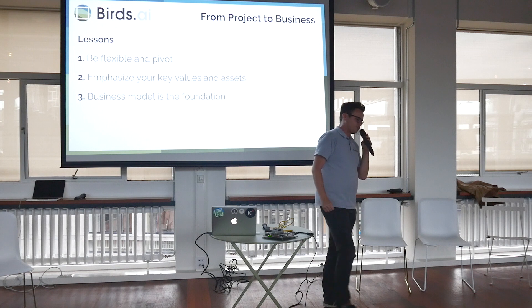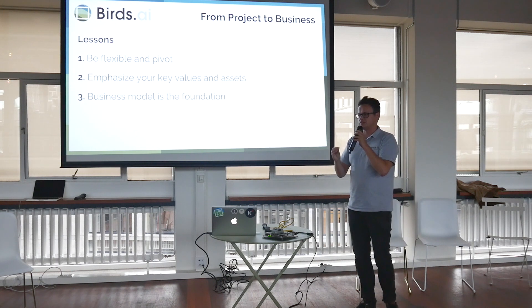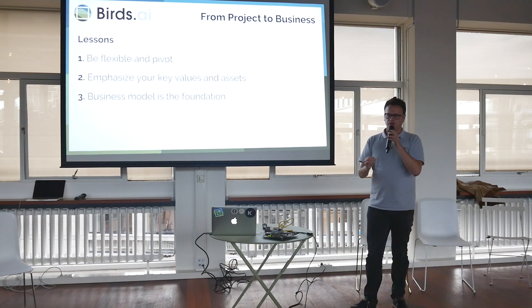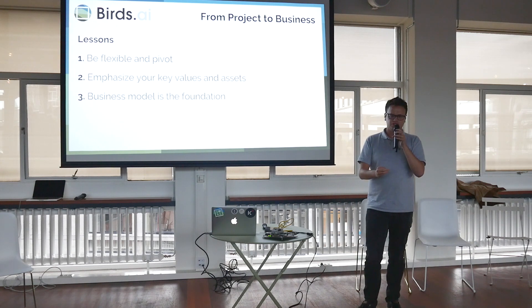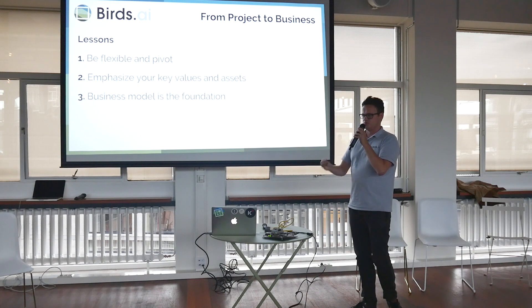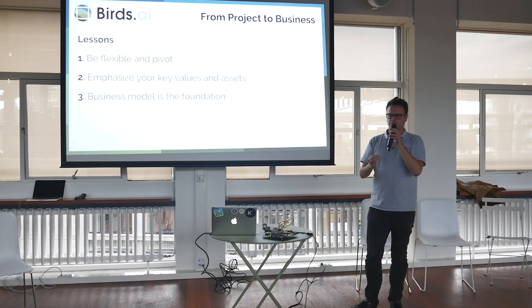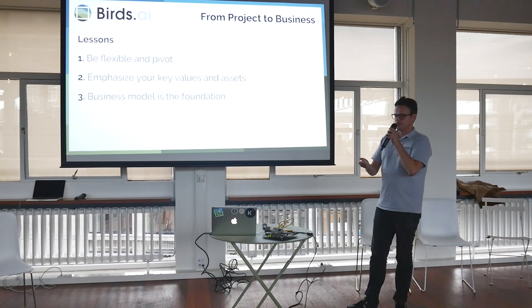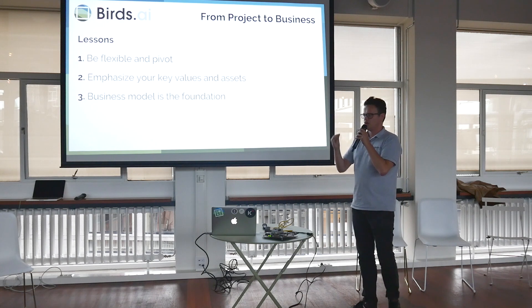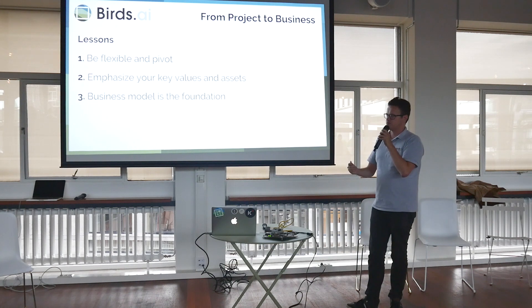The second lesson is to emphasize your key values and assets. We were focused on building both the drone and computer vision technology — both very difficult technologies. So we looked at our team and realized we have more AI people than aerospace engineers. We also looked at the market: the drone market is very competitive, with one dominant player, DJI. So there's no point in fighting that. We asked where the gap in the market is, and we concluded computer vision is not there yet — that's why we focused on that specific thing, based on our team's strengths.